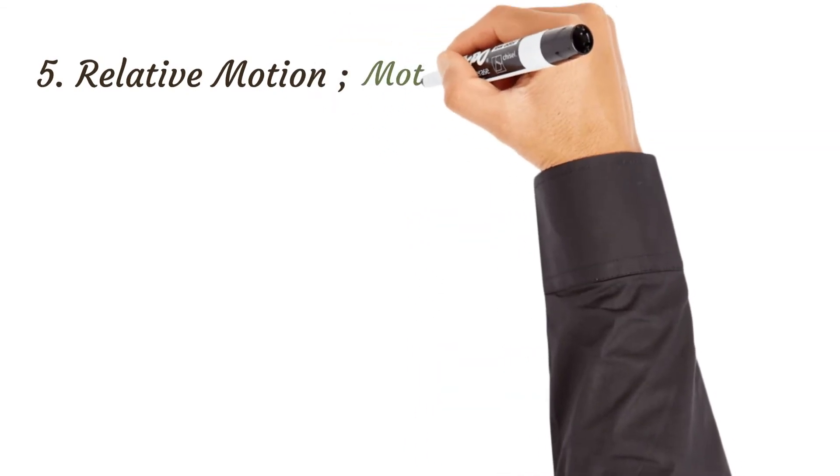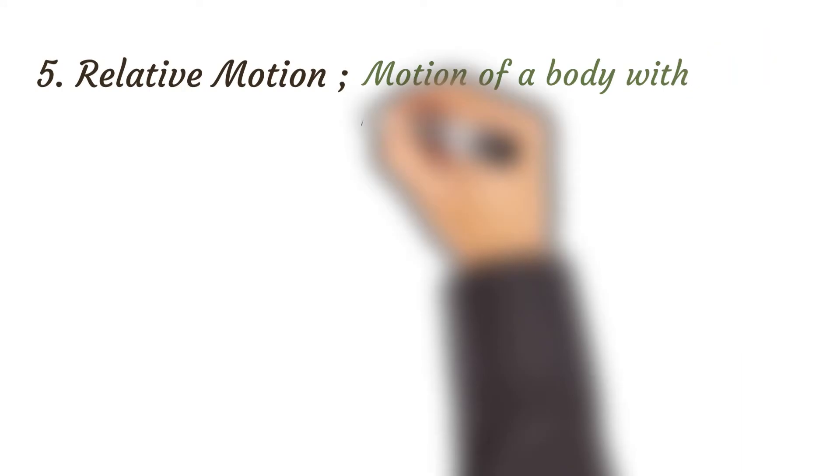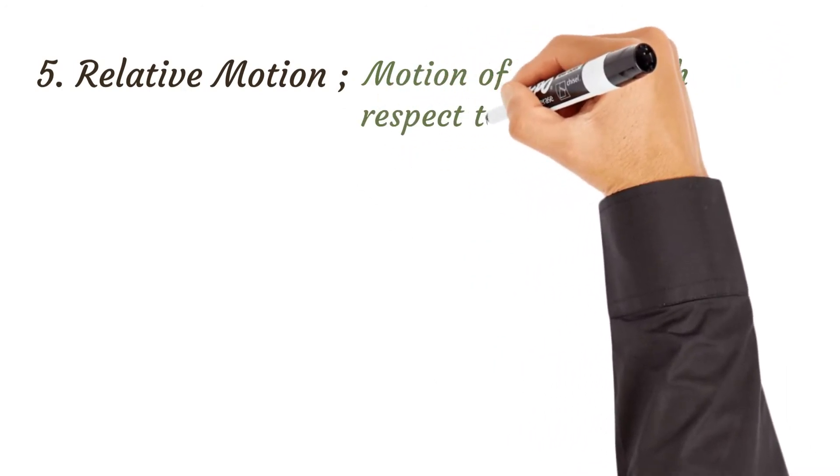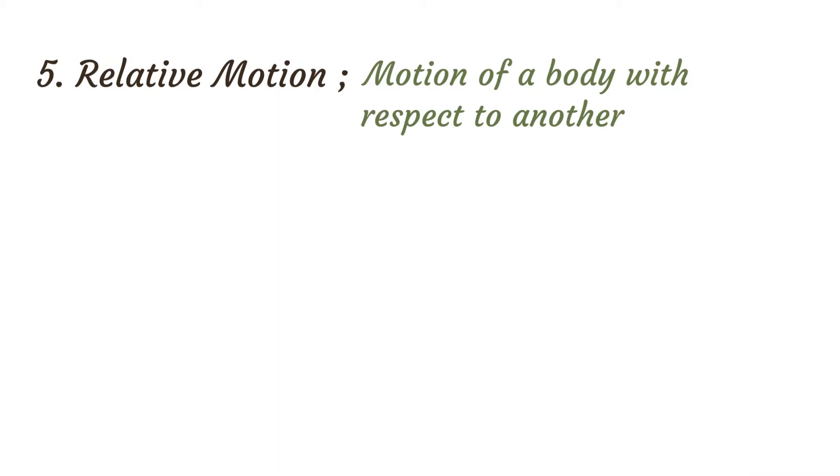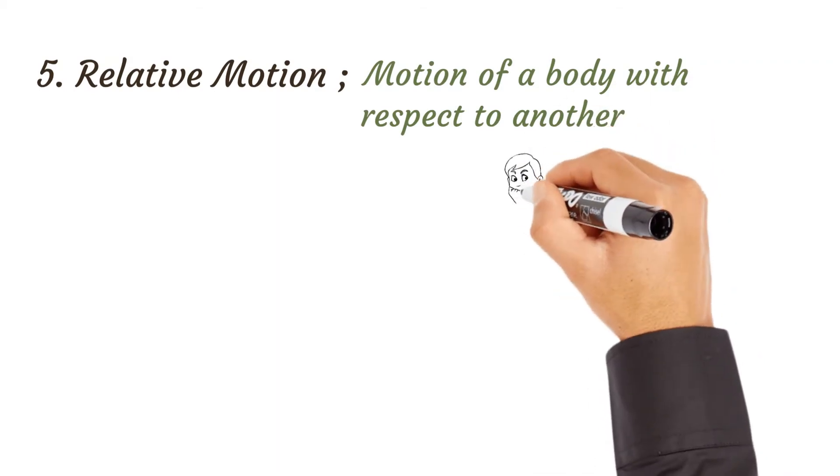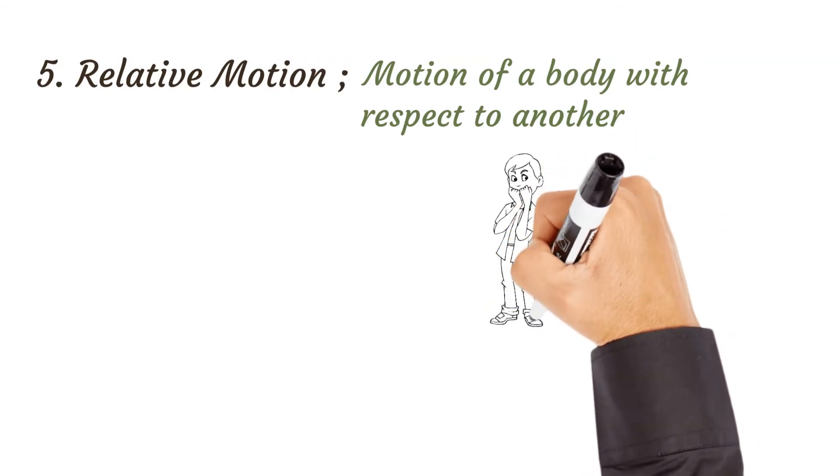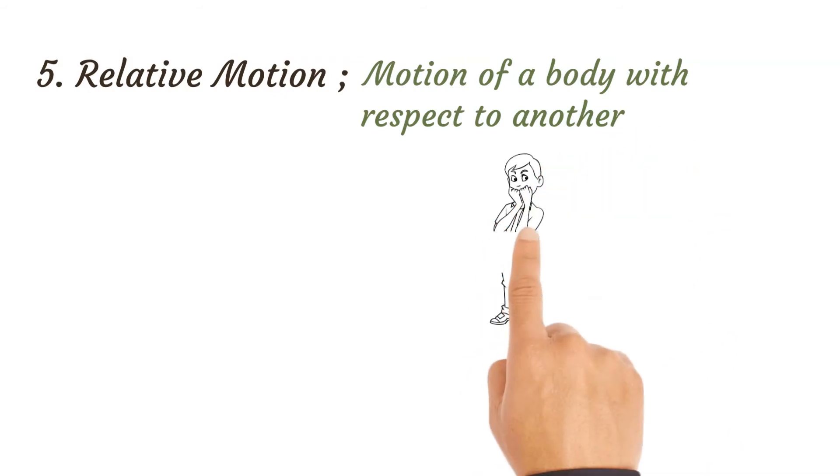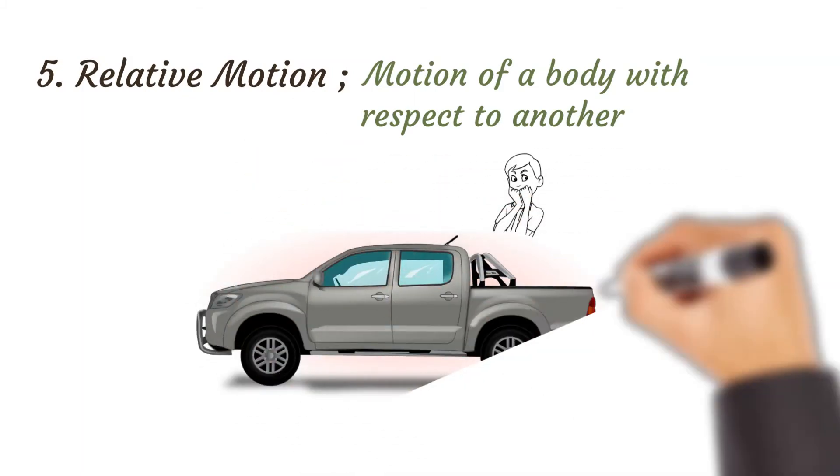Number five, relative motion. This is motion of a body with respect to another body. For instance, if you are inside a car, as the car moves you are moving also at the speed of the car. If the driver matches brake, you tend to jerk forward, why? Because you are moving relative to the car.